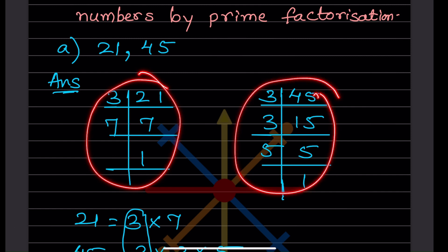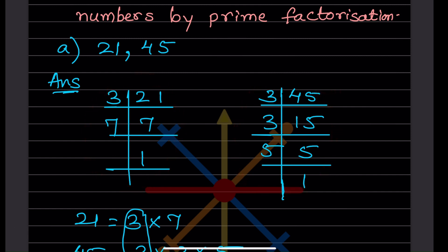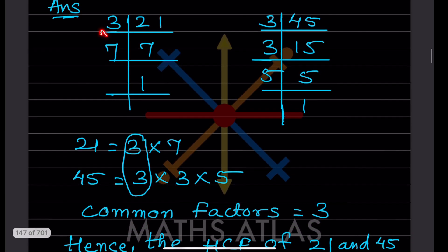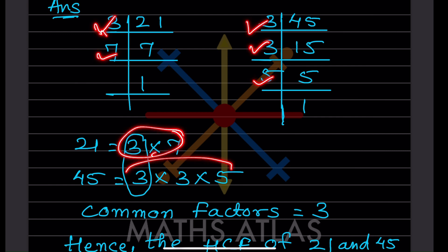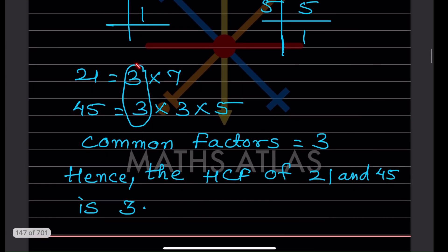For prime factorization of 21 and 45: 21 = 3 × 7, and 45 = 3 × 3 × 5. In prime factorization, always start with the lowest prime number — start with 2, then 3, then 5, and so on. For 45, 2 doesn't work, so we go with 3. Write the prime factors of each number separately, then identify the common ones.